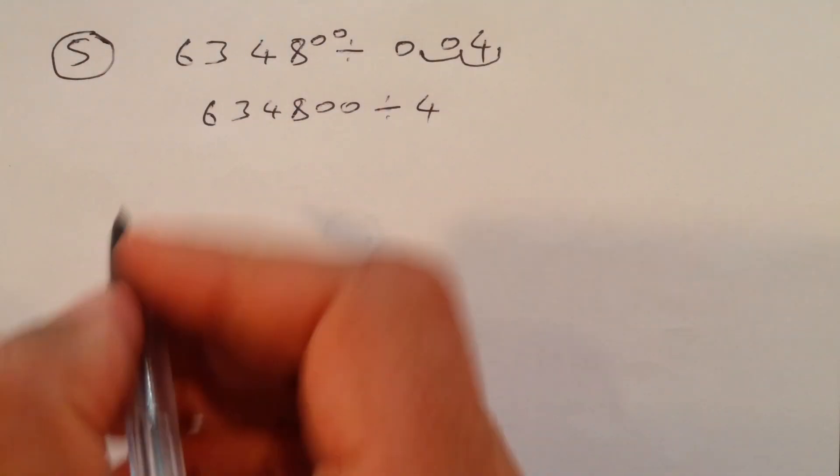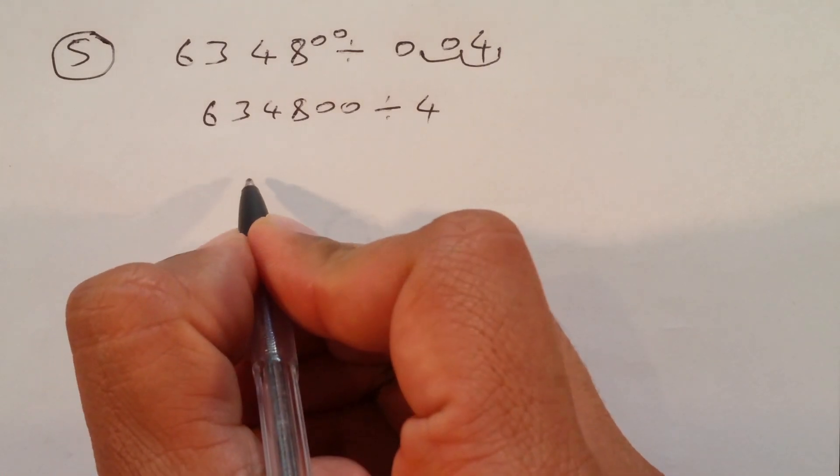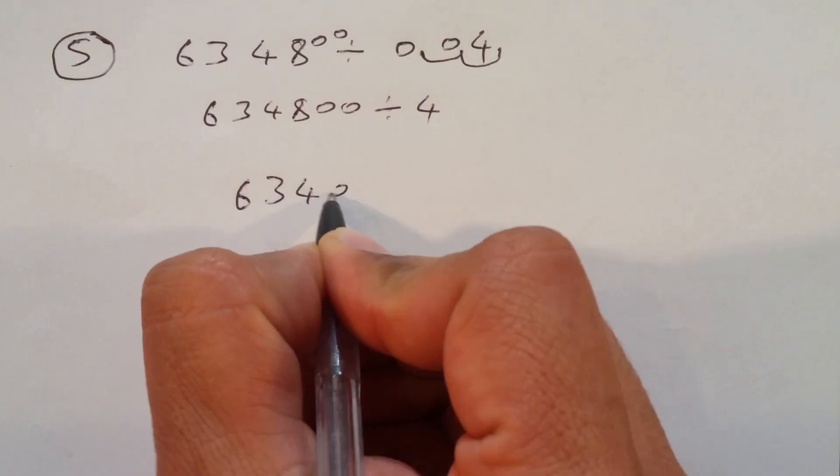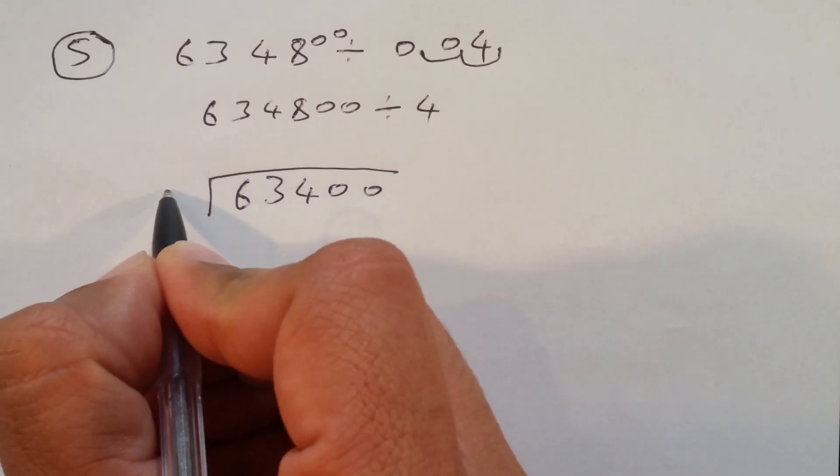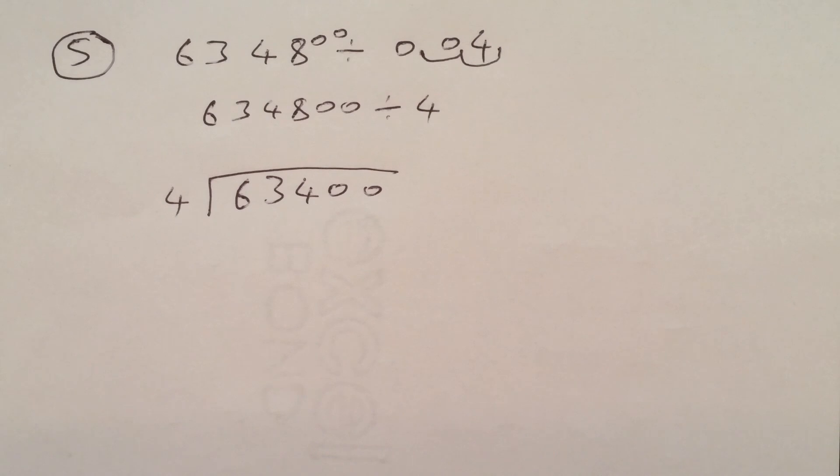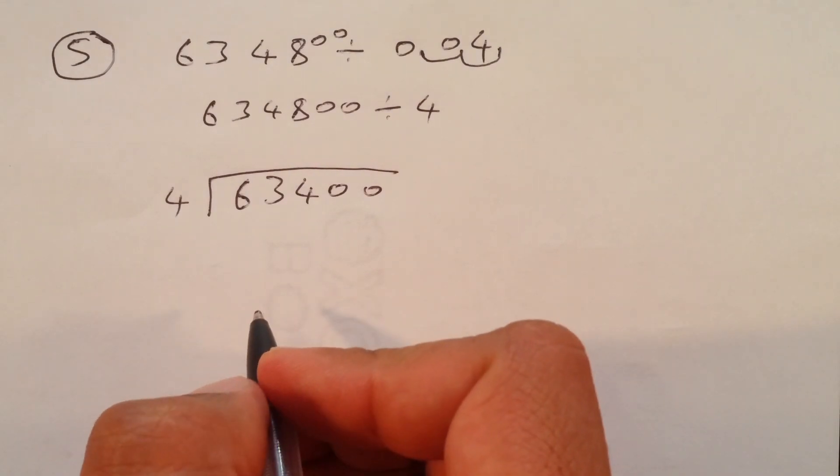So, let's start dividing now. Six, three, four, zero, zero. Divided by four. Let's start division now. First, I'm at third. Short division.